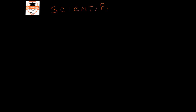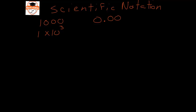This video will review scientific notation. Scientific notation is a faster way of writing numbers that have lots of zeros in them to explain their magnitude. You can write a very large number such as one thousand as 1 times 10 to the third, or a very small number like one thousandth as 1 times 10 to the negative three.